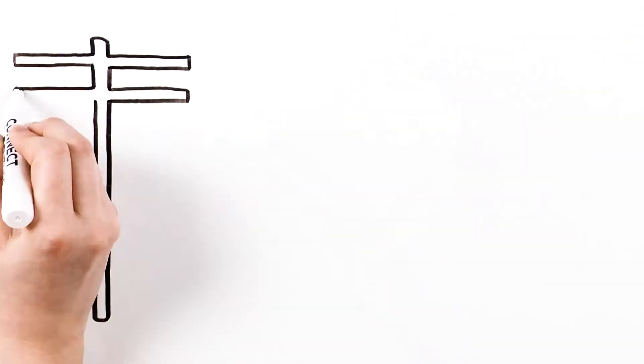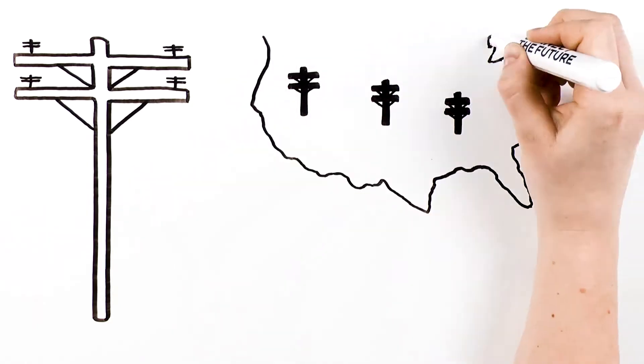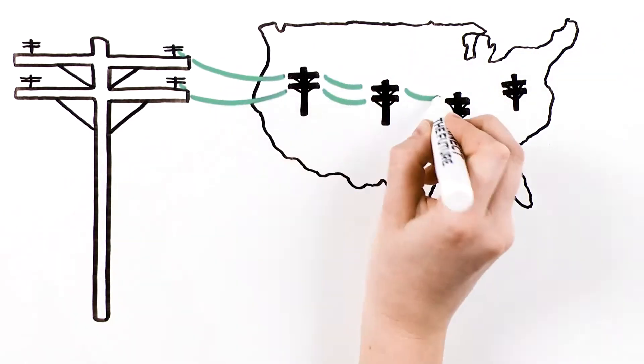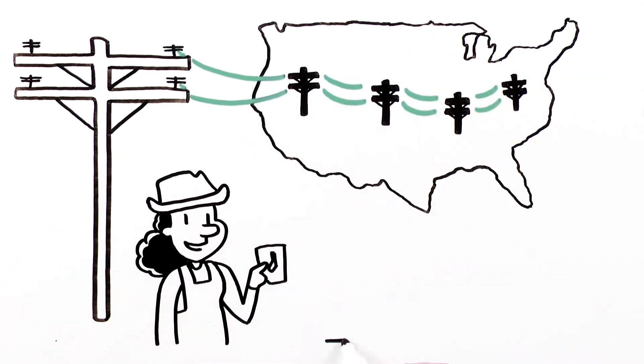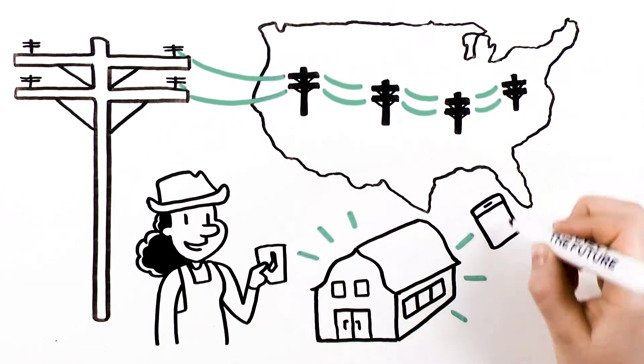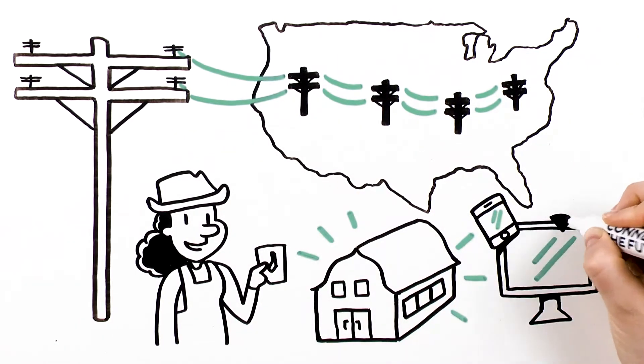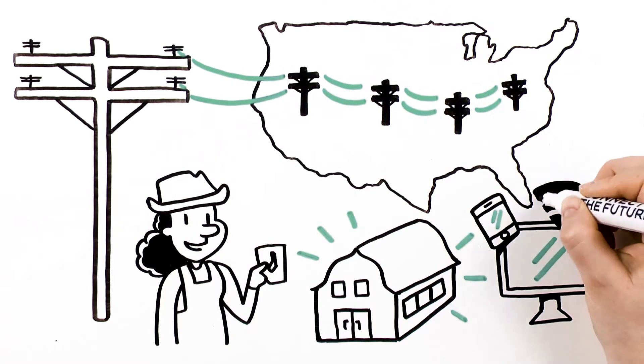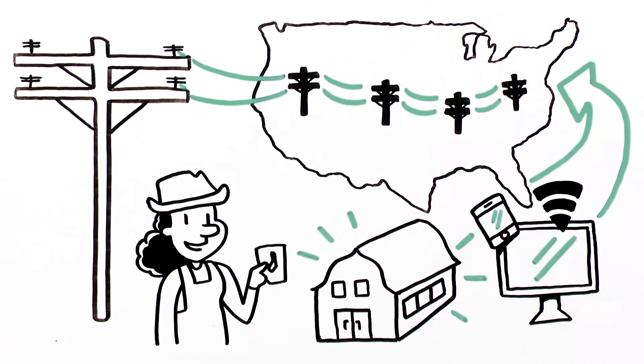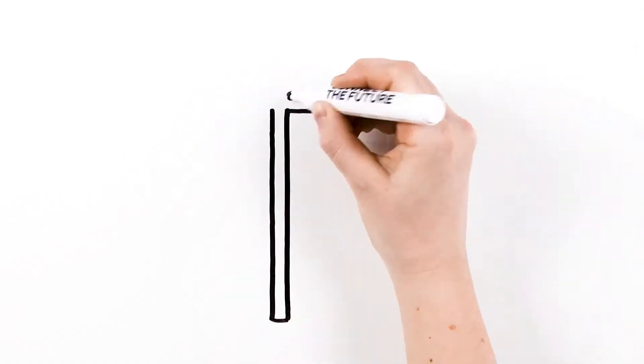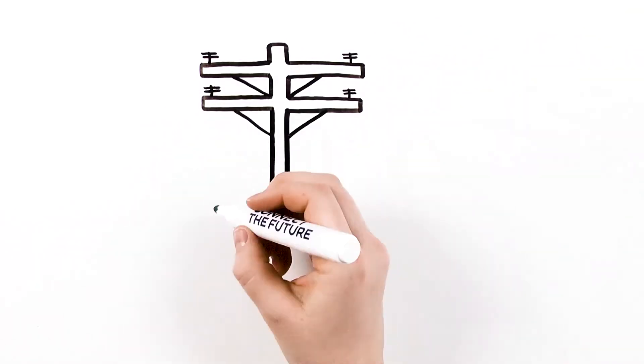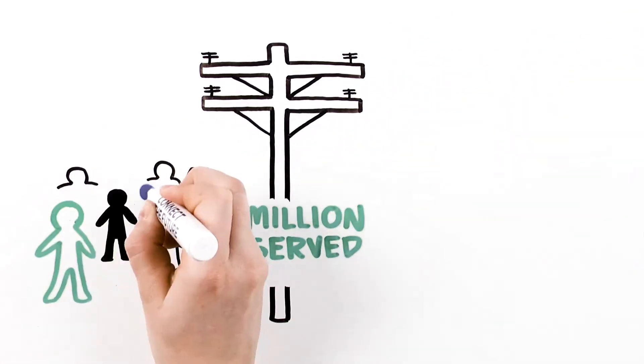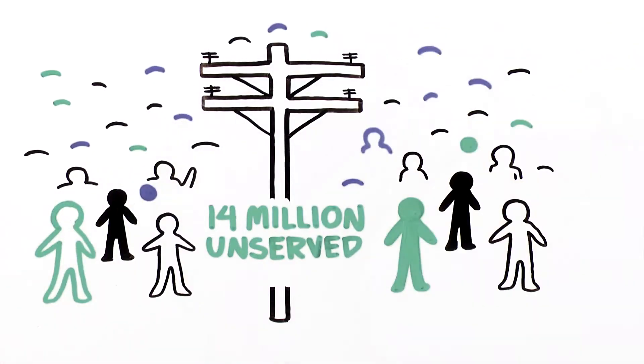The utility poles that line our communities stretch across the nation, supporting America's critical infrastructure, lighting our homes, and helping us stay connected. Phones, broadband, even Wi-Fi and mobile connections all rely on utility poles. So how do these poles impact the more than 14 million Americans who live in areas that still don't have internet access?